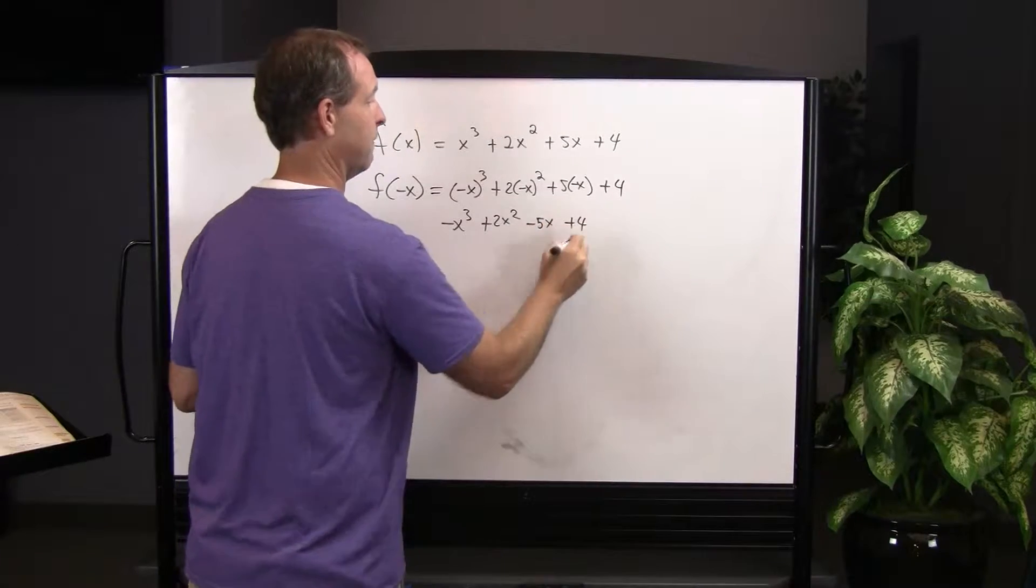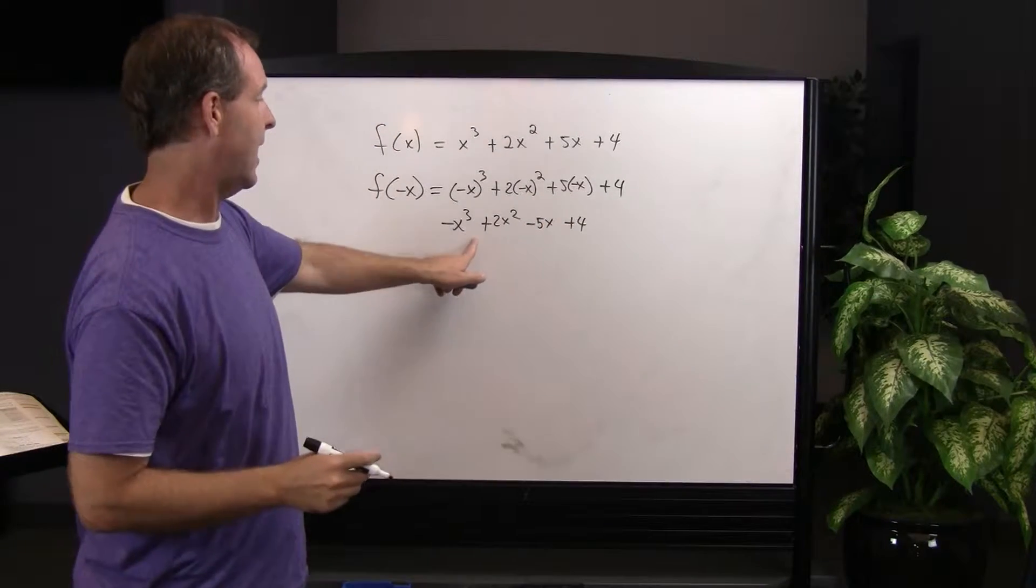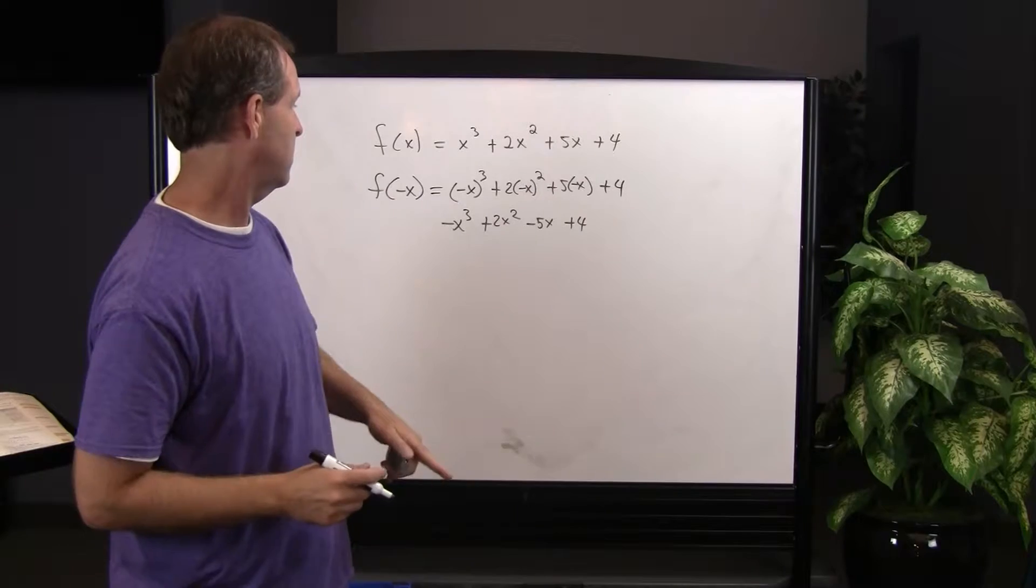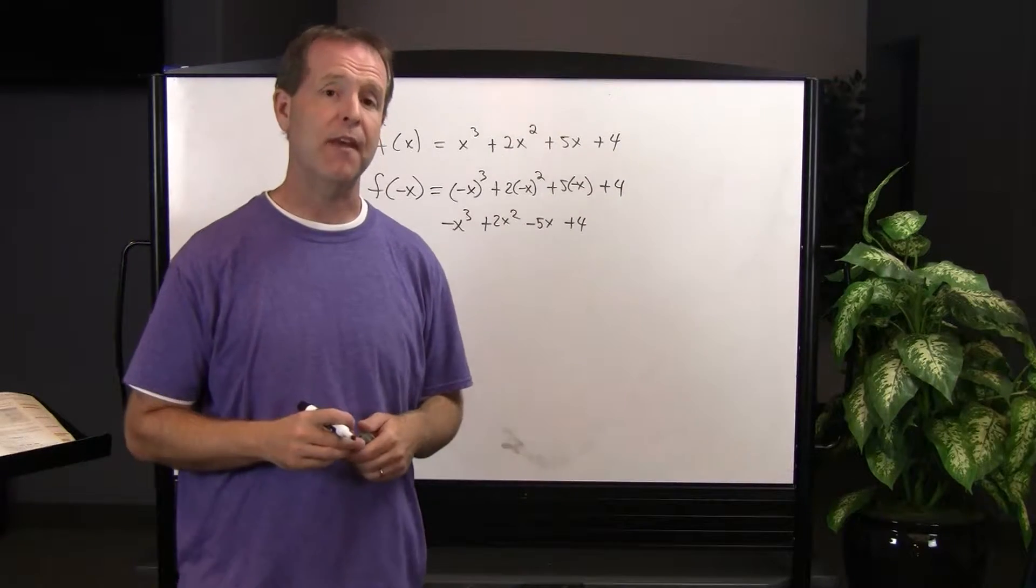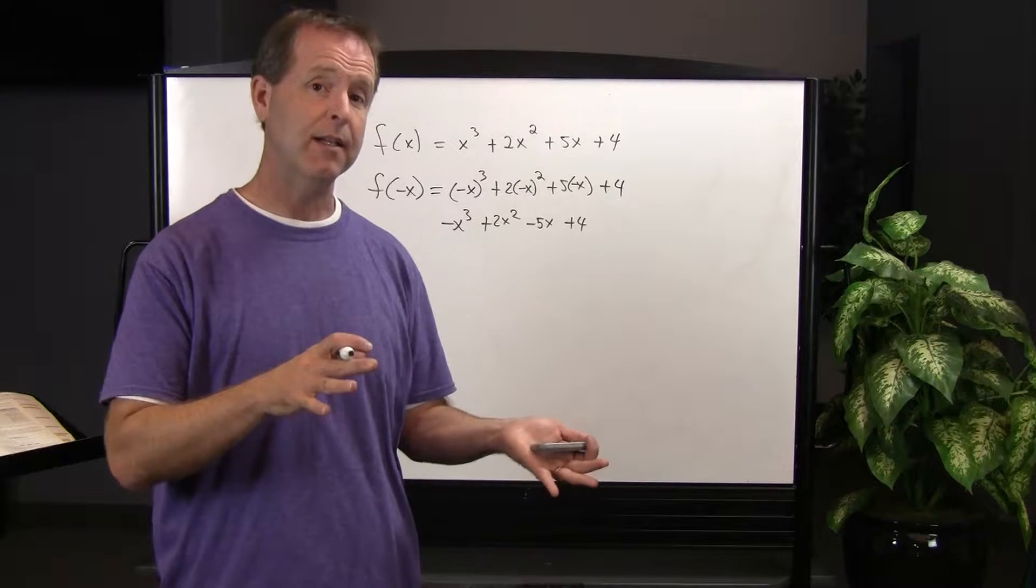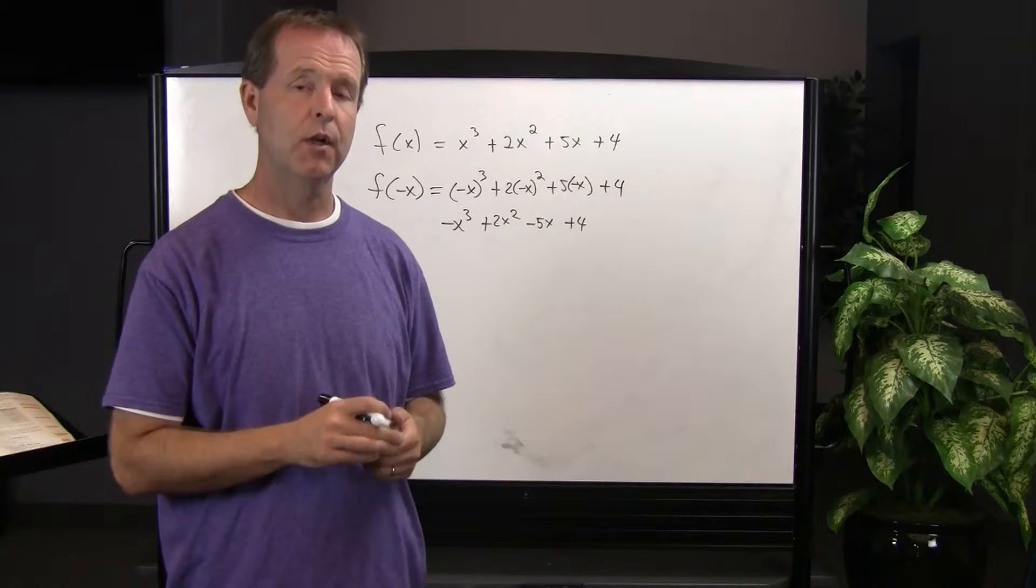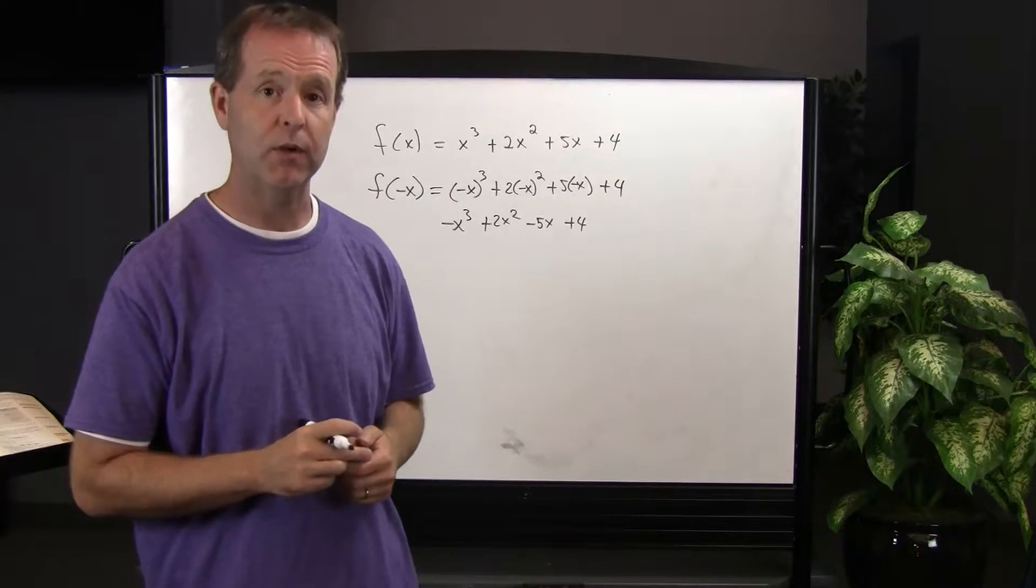negative 5x plus 4. However, the sign changes 1, 2, and 3 times. So that tells me that there are either 3 negative real zeroes or 1 negative real zero.